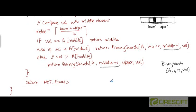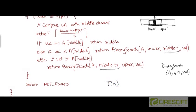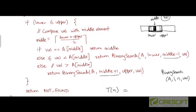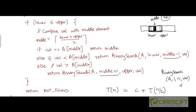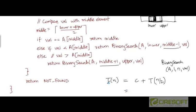The time complexity of this algorithm remains the same as the iterative version. The time to run binary search on an array of size n equals a constant amount of time to compute the middle index and compare val with the middle element, plus the time for the recursive call on a sub-array of approximately half the size. So T(n) = c + T(n/2), and as shown in the previous video, the solution to this recurrence is T(n) = Θ(log n). The asymptotic complexity is the same for the recursive version of binary search.